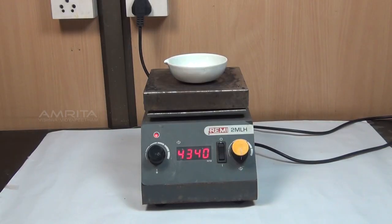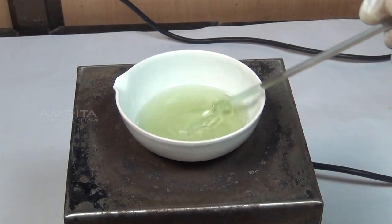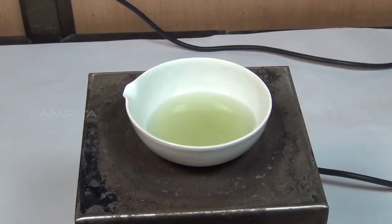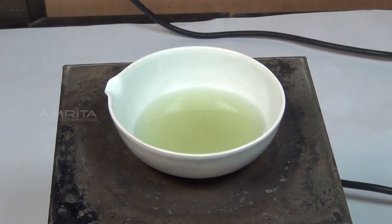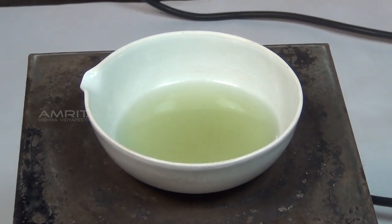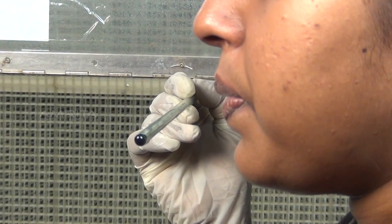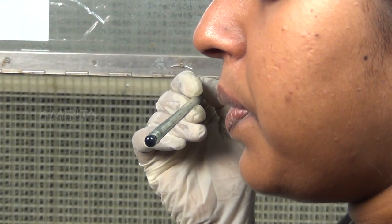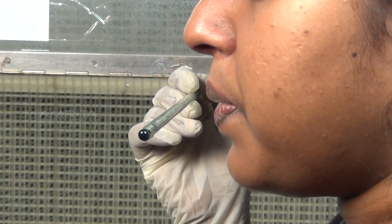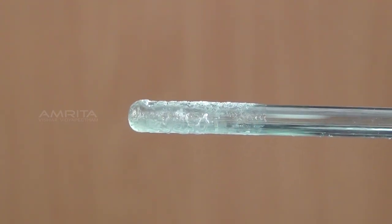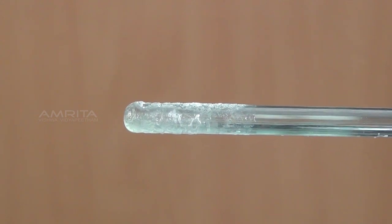Heat the solution in the china dish over the hot plate. To avoid crust formation on the side of the dish, stir the solution continuously with a glass rod. When the volume is reduced to about half its original volume, take out a drop of the concentrated solution at the end of the glass rod and cool it by blowing. Formation of a thin crust indicates that the crystallization point has been reached.